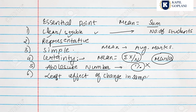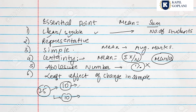Fourth essential: least effect of a change in the sample. If you take different samples from the same data, the result should not change drastically — for example, from 25 students, whether you take one sample of 10 or another, the mean should be consistent. This indicates the formula is correct. Fifth: algebraic treatment — it must be possible to process the average further mathematically.